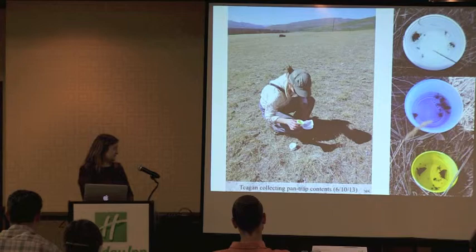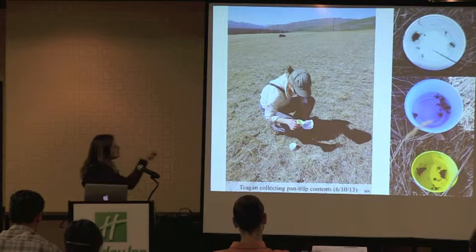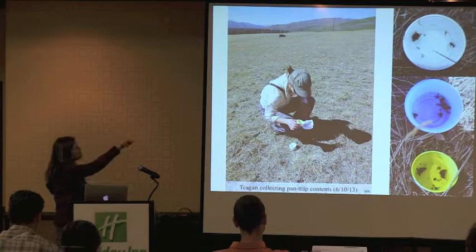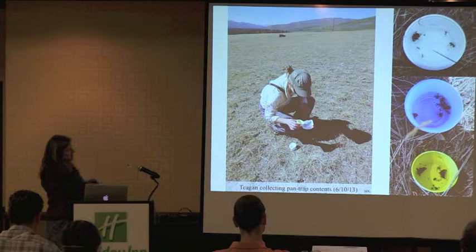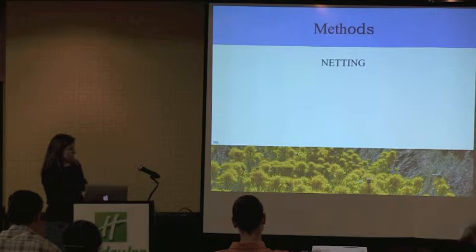Here's Tegan collecting pan trap contents out at point 108. This is the result of pan trapping — a line of bowls passively sampling bees. After 3 PM we come back and sometimes there's a little bycatch. We strain the contents through a brine shrimp net and place the material into a whirlpack bag with alcohol.